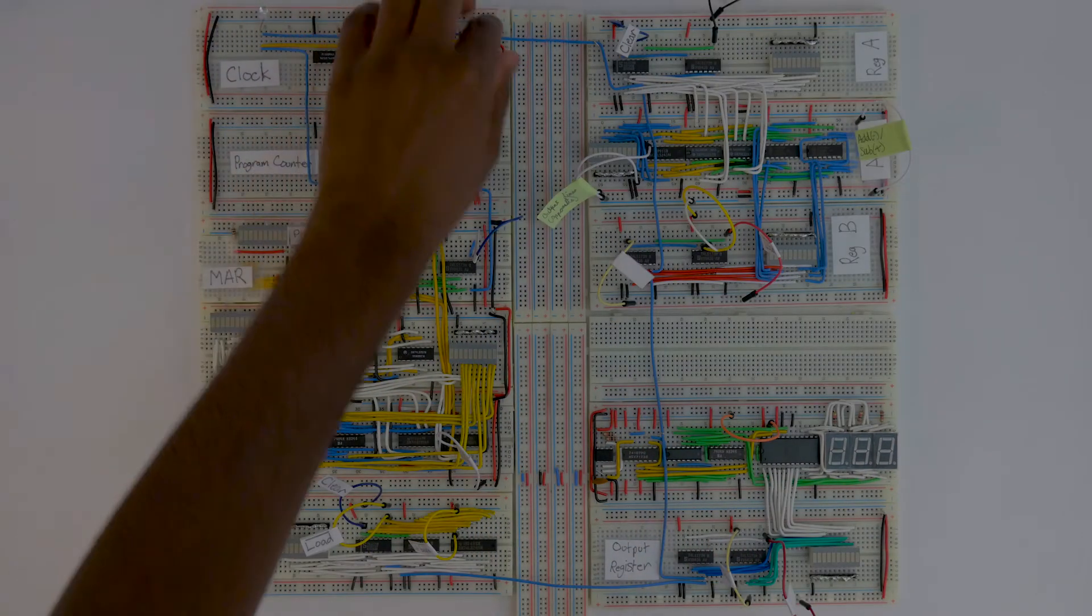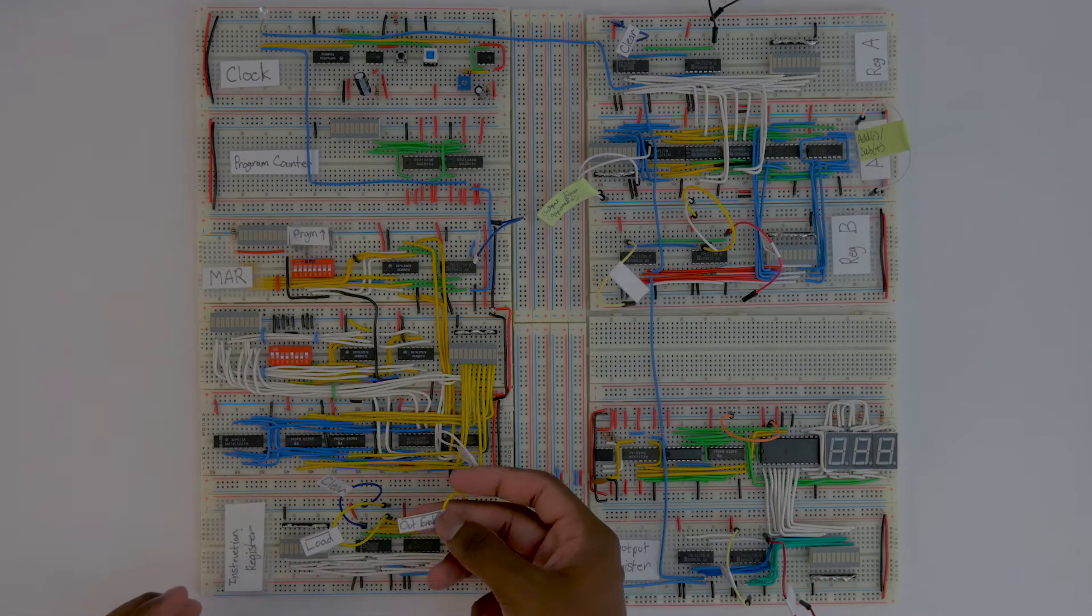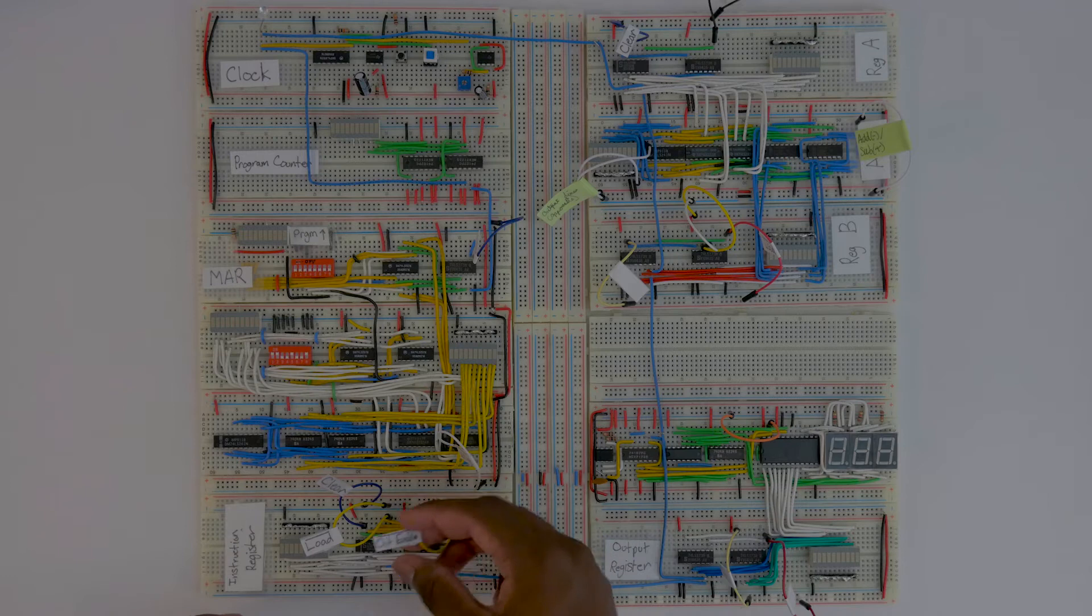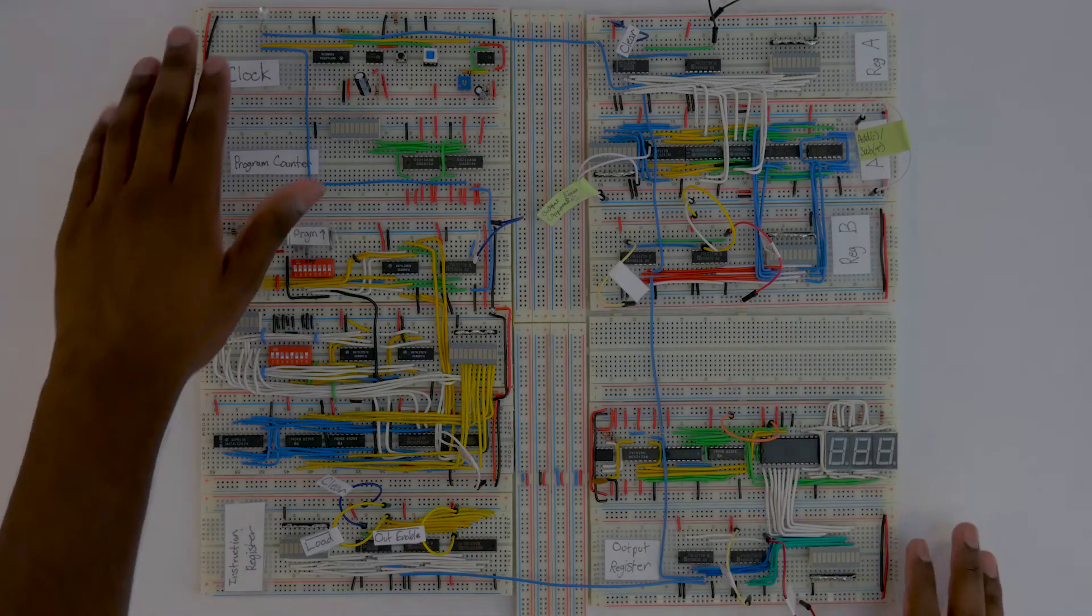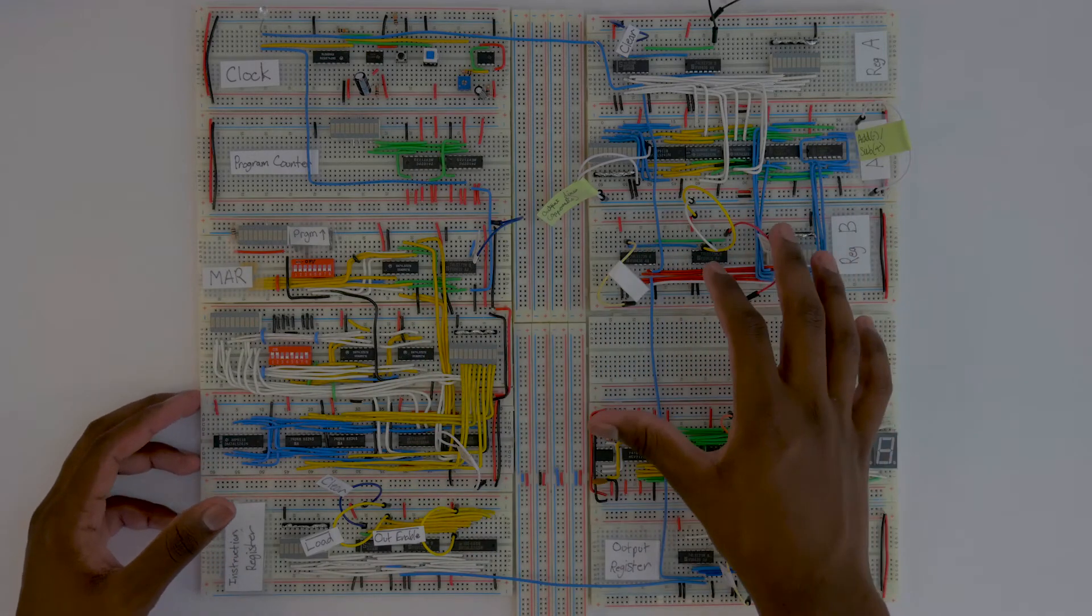So I've connected up the clock module and it's these blue lines that sort of go all around the CPU, which means we have no more of these lines that have clock written on them. They're all taken out now because they're all connected to the clock. So the next step is going to be connecting everything up to the bus.